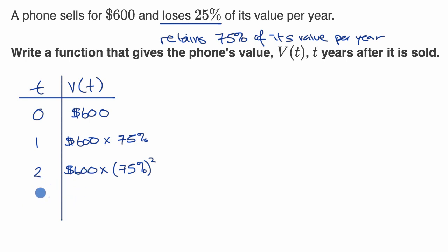And I think you see a pattern. In general, if we have gone, let's just call it T years, well then, the value of our phone, if we're saying it in dollars, it's just going to be $600 times, and I could write it as a decimal, 0.75 instead of 75%, to the T power. So V of T is going to be equal to 600 times 0.75 to the T power. And we're done.